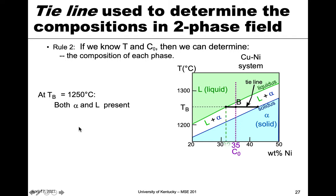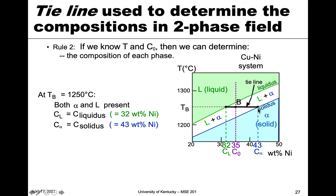The tie line tells us the composition of the liquid and the composition of the solid. Following the line to the liquidus and tracing down gives 32 weight percent nickel — that is the composition of the liquid. Following the intersection with the solidus down gives 43 weight percent nickel — that is the composition of alpha. So these terminal points of the tie line in the two-phase field are the compositions of the two phases.